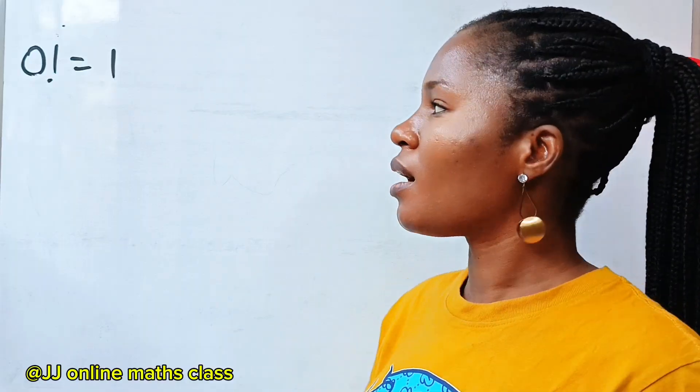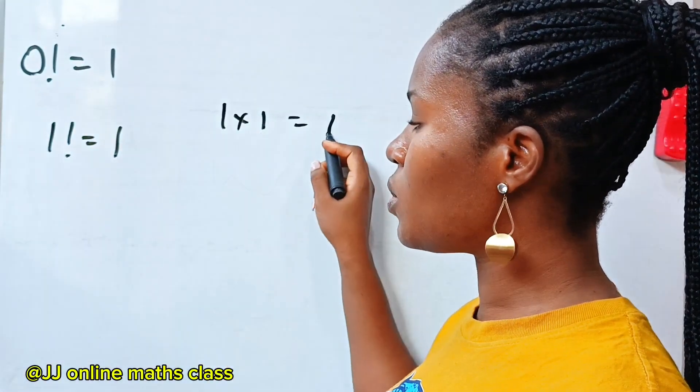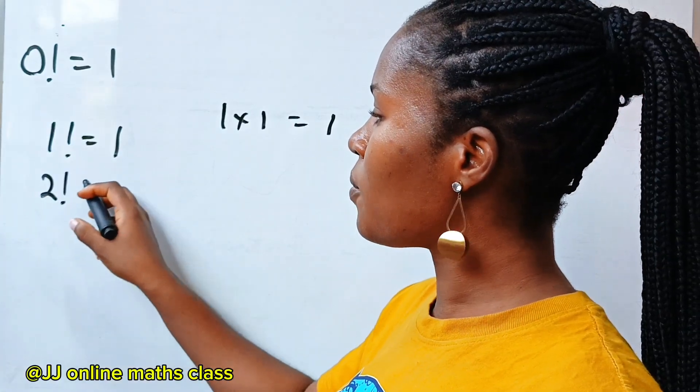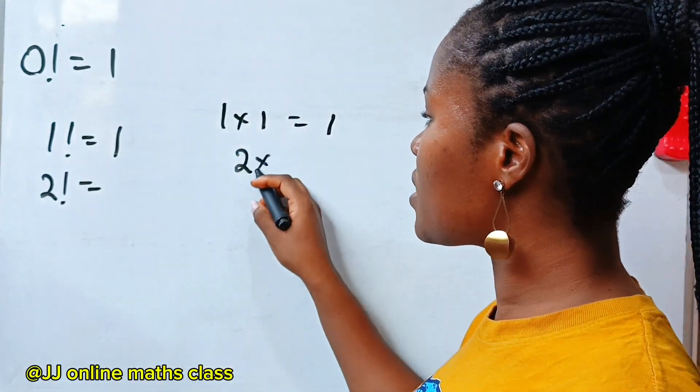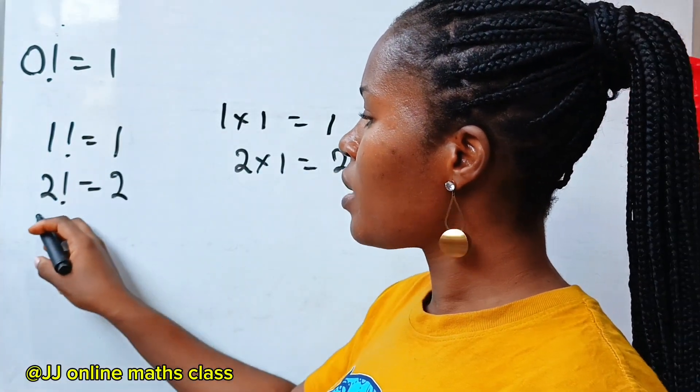First of all, 1 factorial is equal to 1, that is 1 times 1, which is 1. Now, 2 factorial is equal to 2 times 1, which is 2.